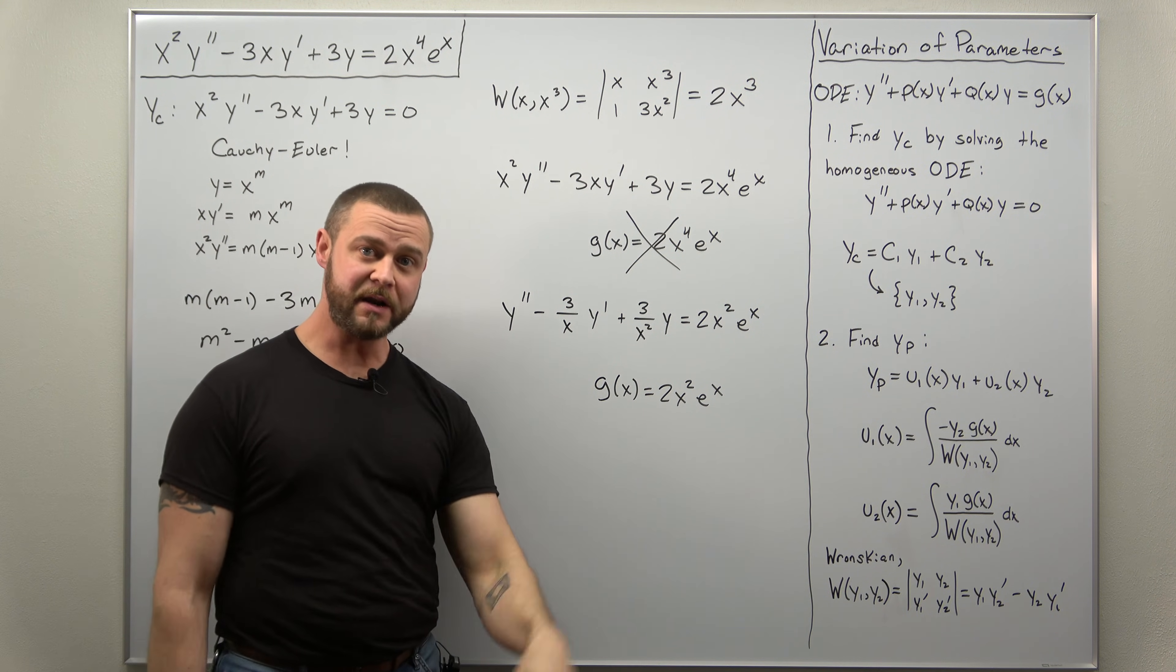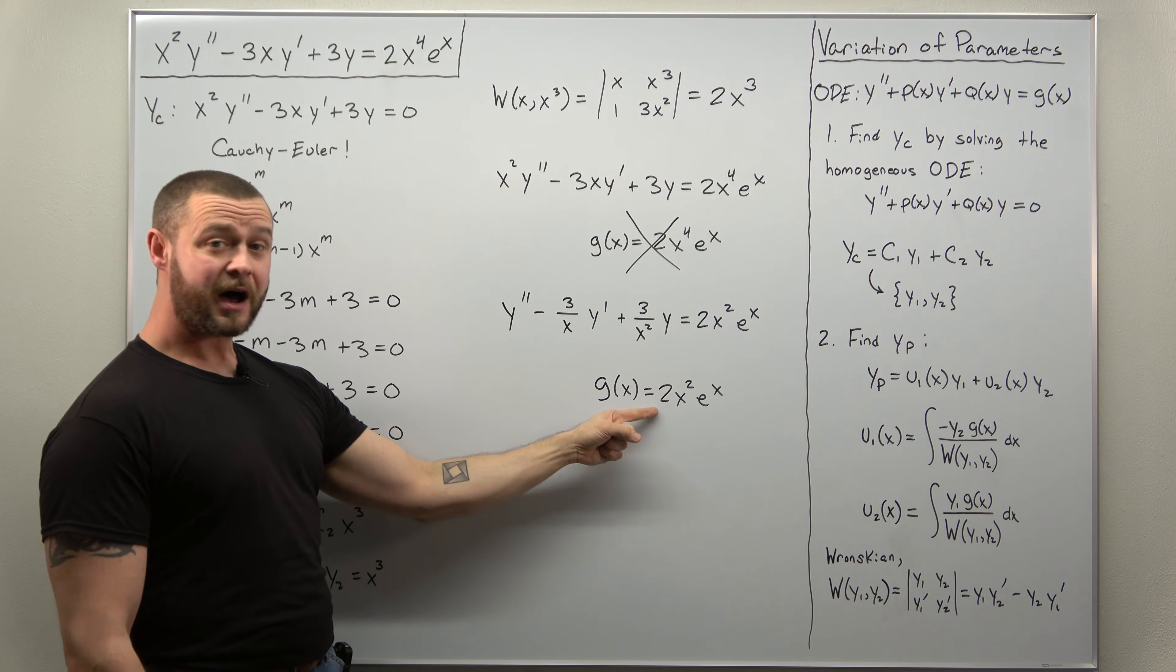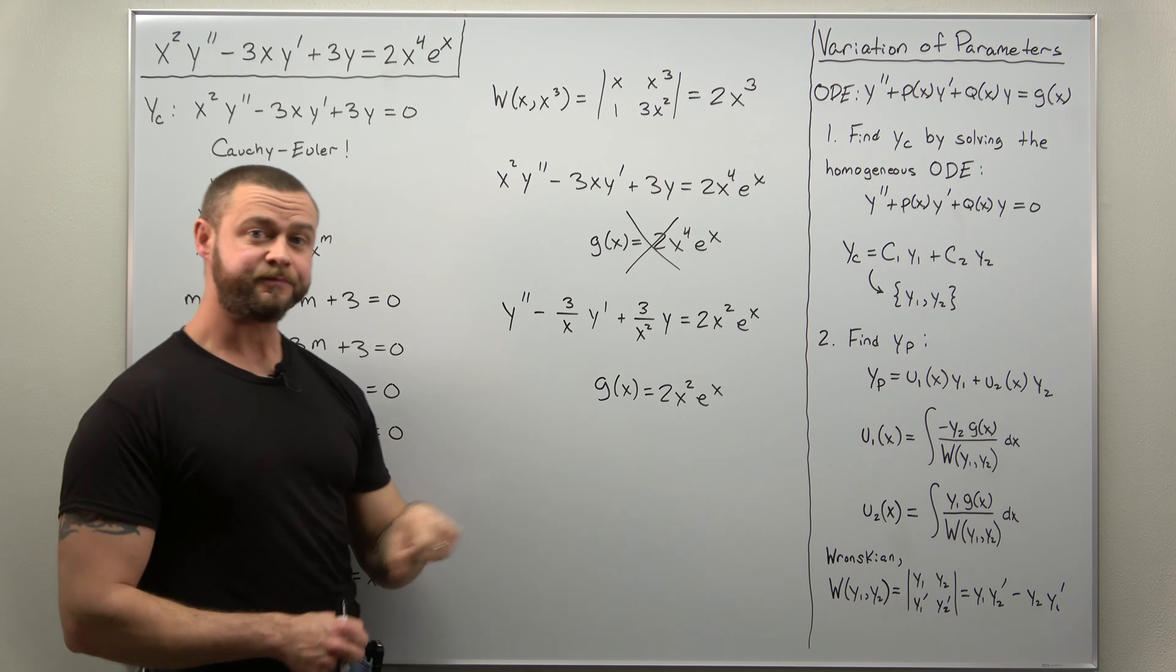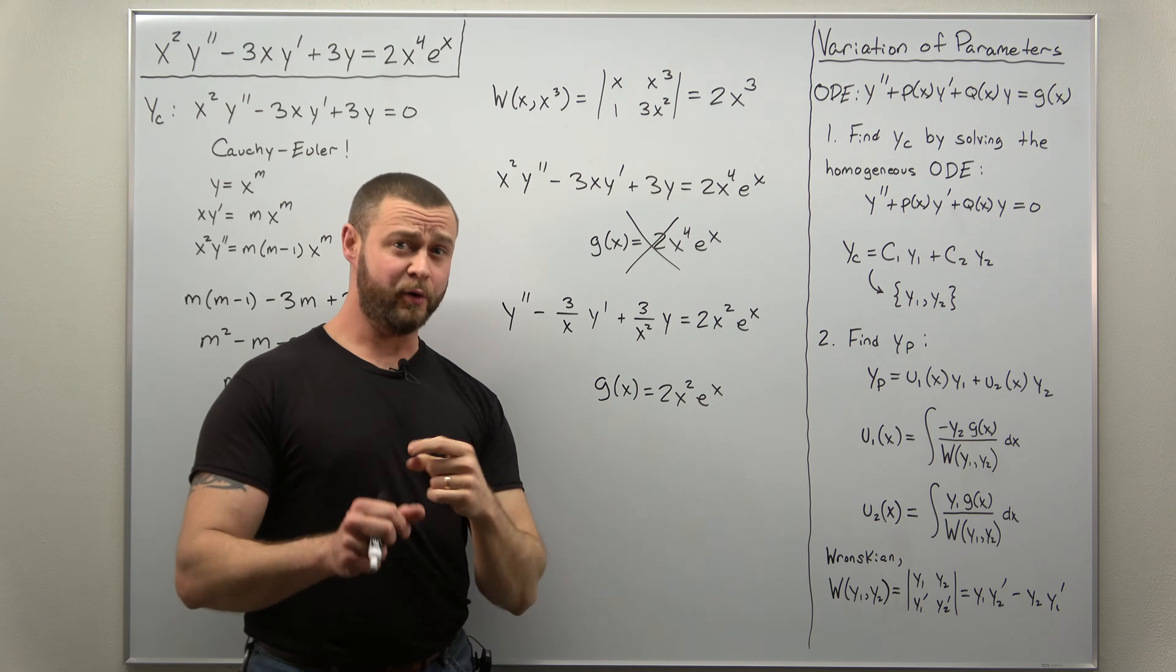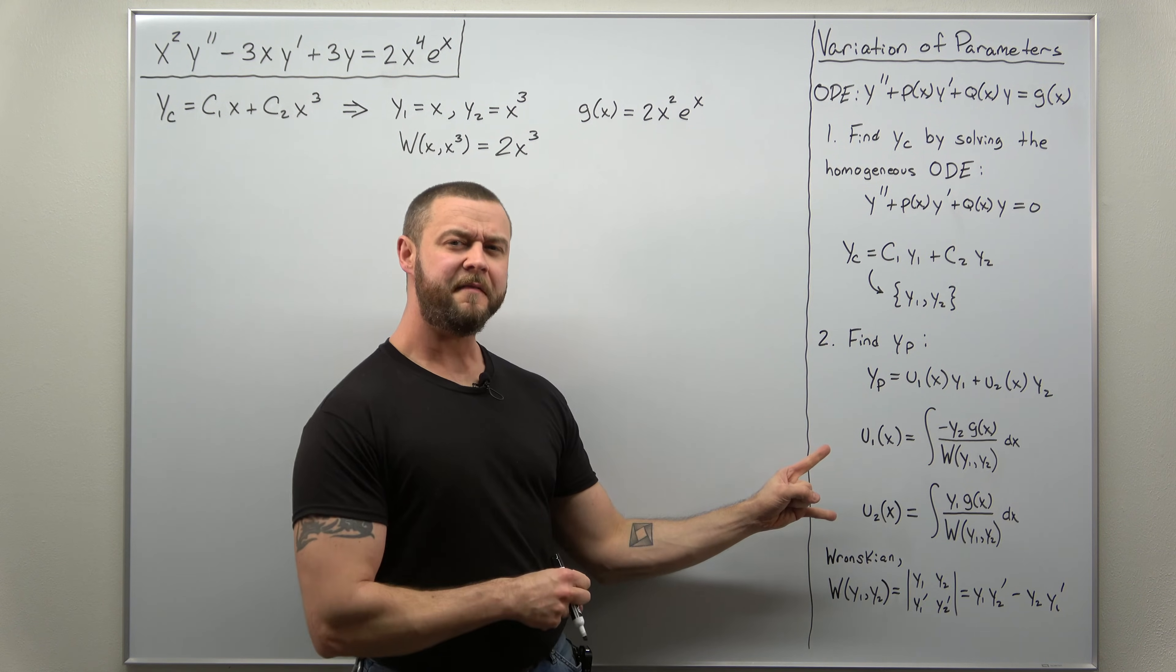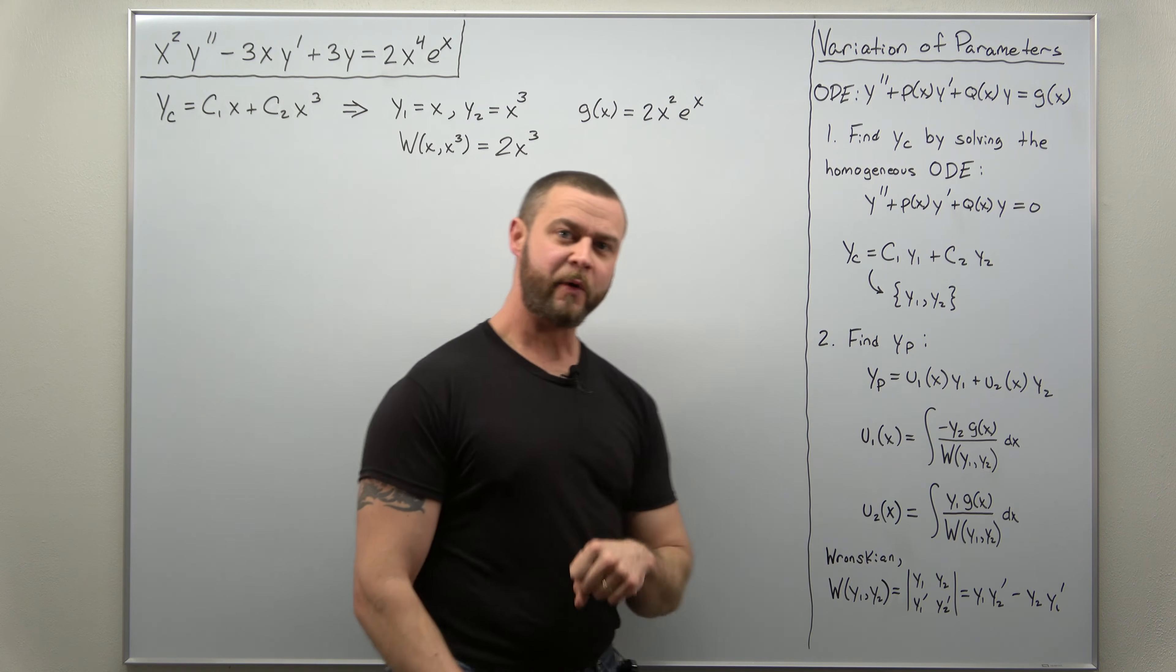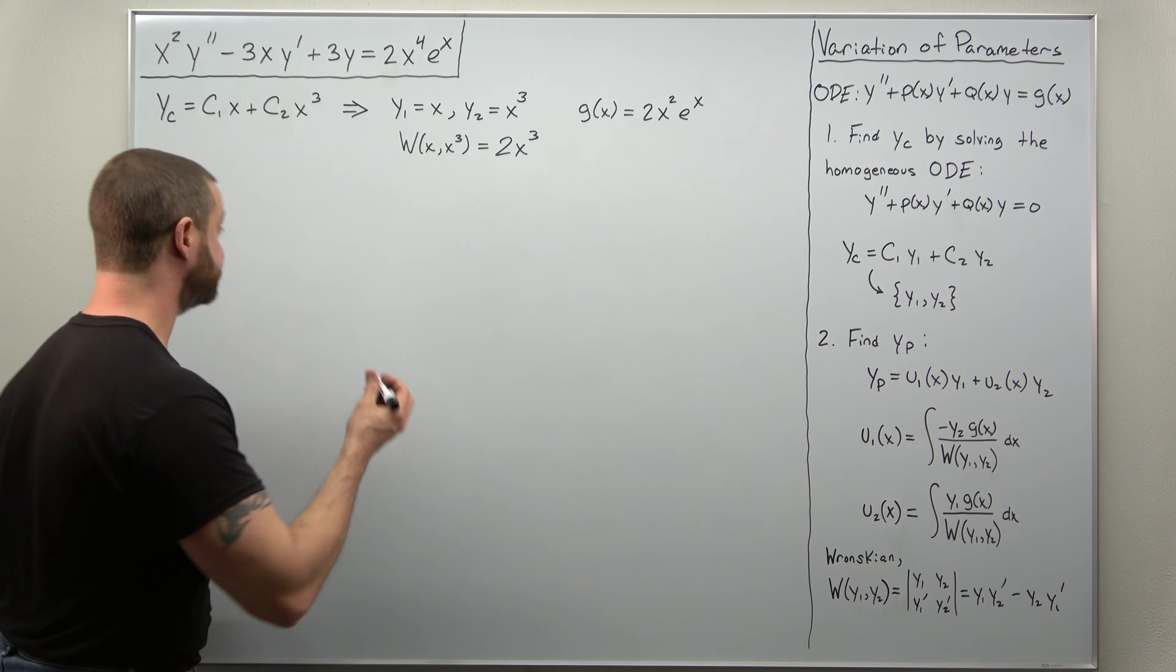If you saw that from the beginning, that is awesome. You probably won't get tricked, but learn from this. We cannot identify G of X in this form, but we can here. So now we have everything we need, Y1, Y2, the Wronskian, and now the correct G of X. We just need to plug everything in and evaluate those integrals. Next up, evaluating those integrals. We have everything we need. Let's go ahead and first find what U1 of X comes out to.